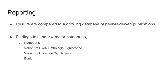The significance of copy number variations in disease is still being investigated. Fortunately, there is a growing database of peer-reviewed publications allowing comparison of microarray data to the literature. Ultimately, the diagnostic significance falls under four classifications: the abnormality is either known to be pathogenic, a variant of likely pathologic significance, a variant of unknown significance, or known to be completely benign.